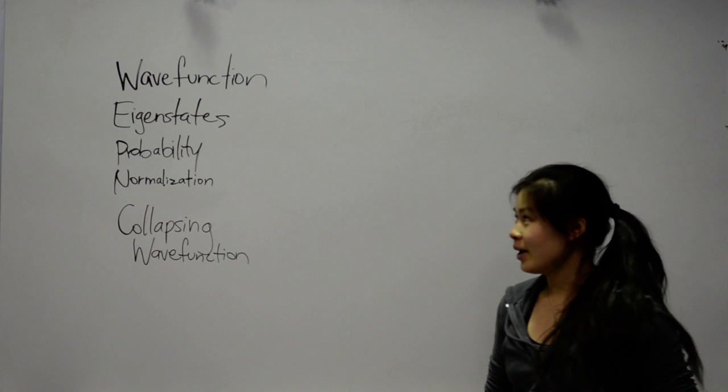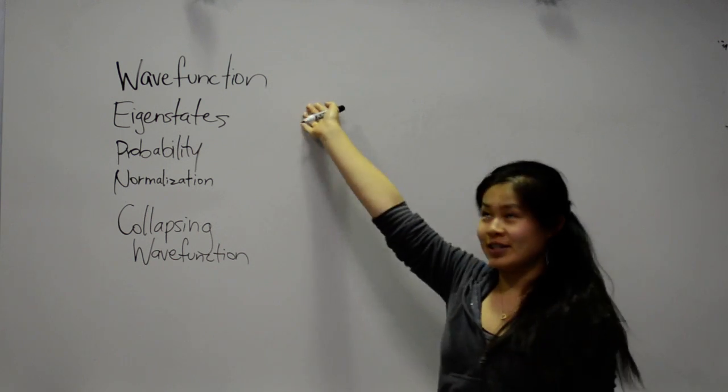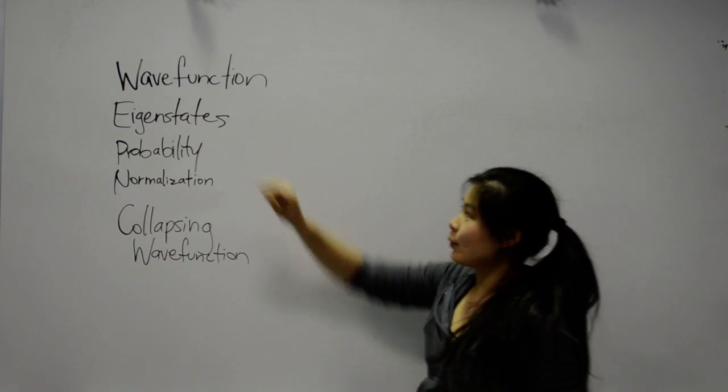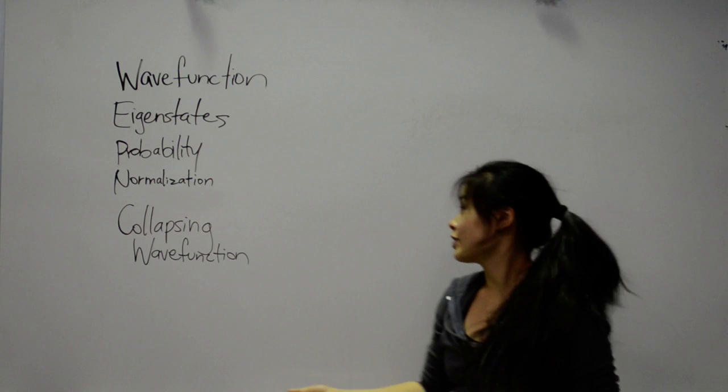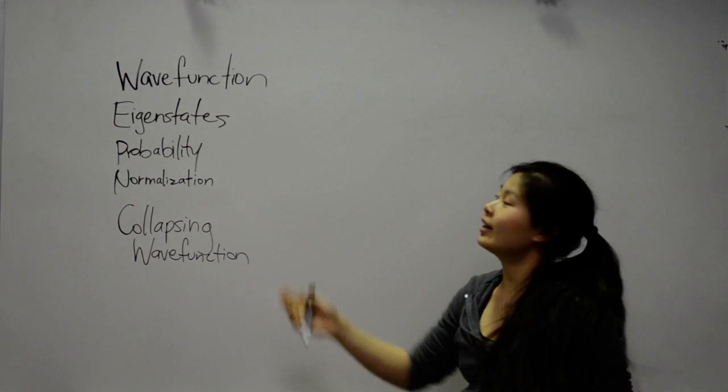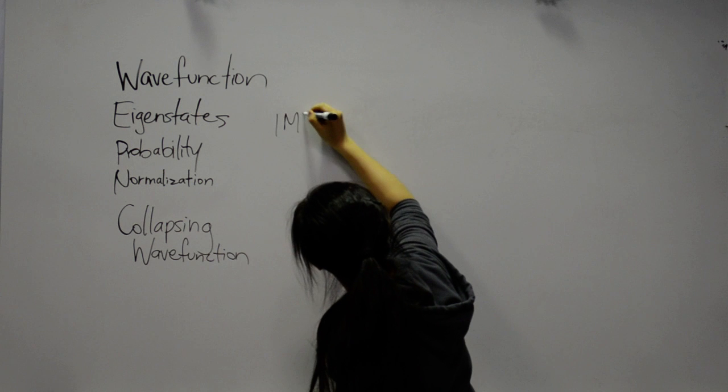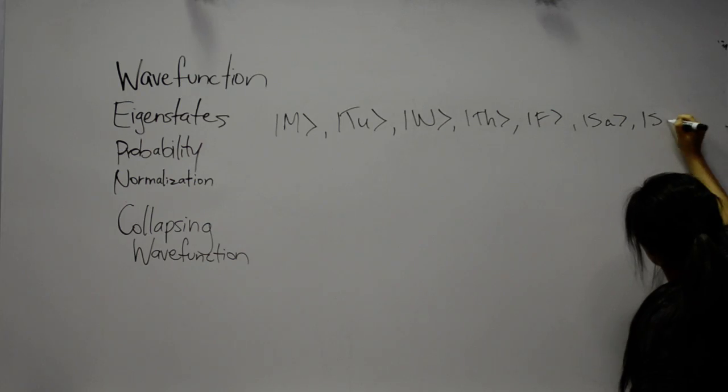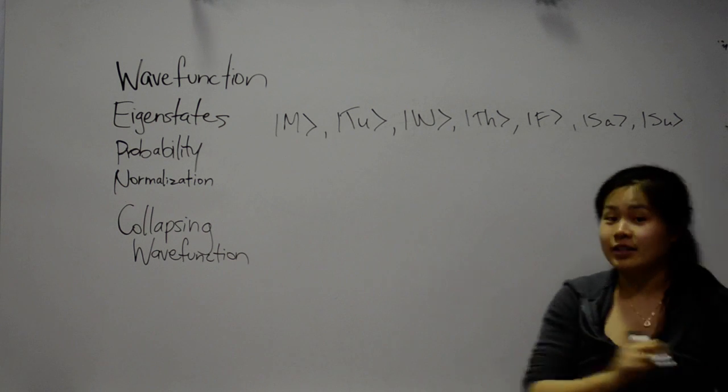So our product works off a wave function, which is based on quantum mechanics. So our wave function is the week, essentially. And our eigenstates are the days of the week, which are Monday through Sunday, in Dirac notation.